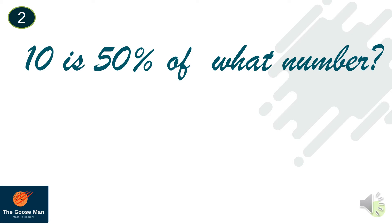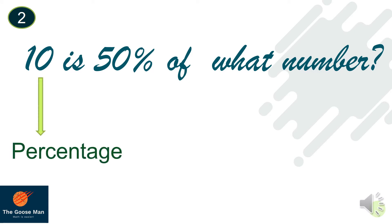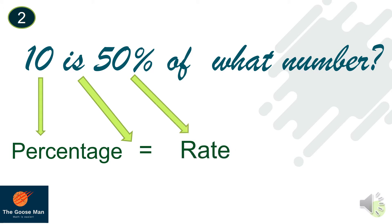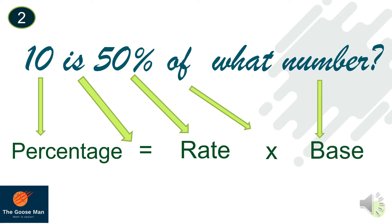Let's try to identify the percentage, base, and rate in another example: 10 is 50% of what number? Take note: 10 is the percentage because it comes before the word 'is.' The word 'is' in symbol is equal to. 50% is the rate. The word 'of' in symbol is times, and 'what number' is the base because it comes after the word 'of.'